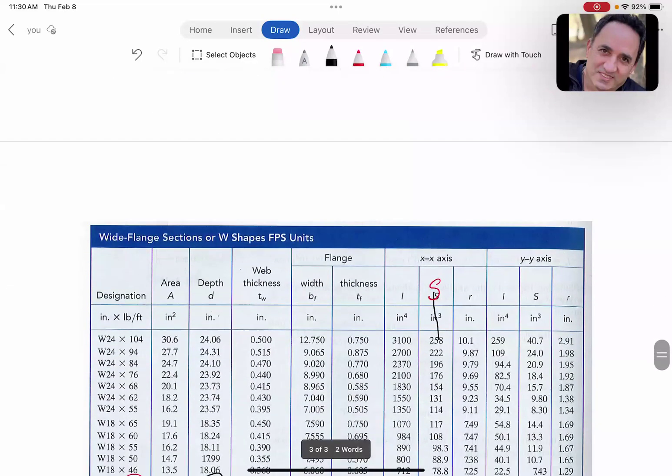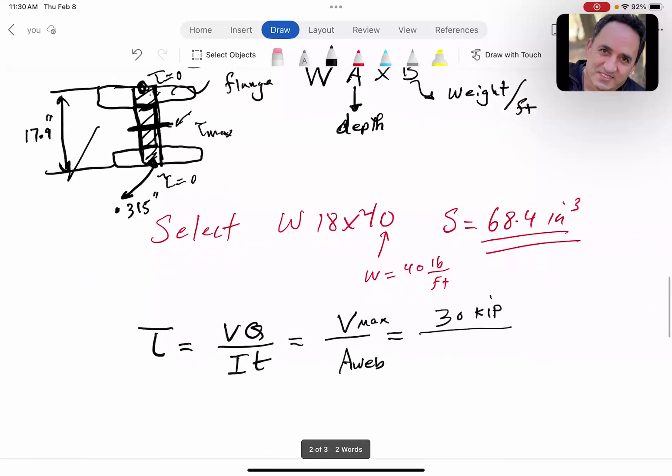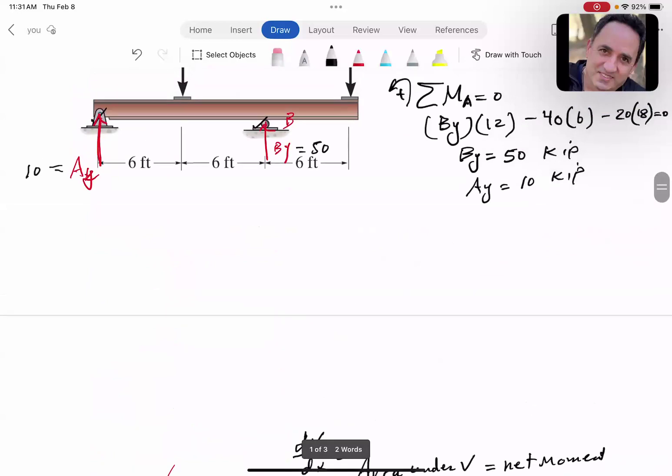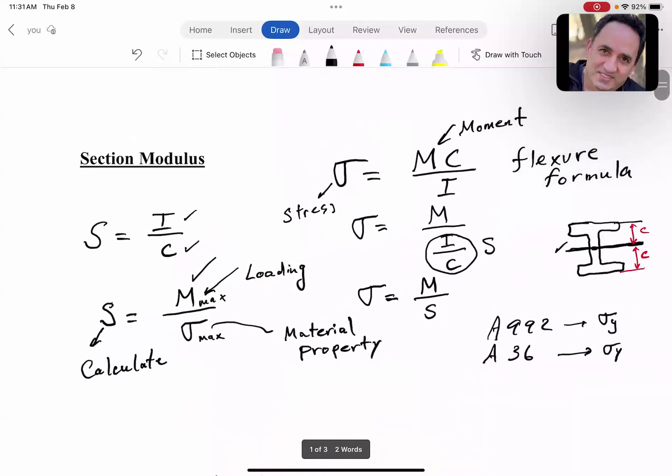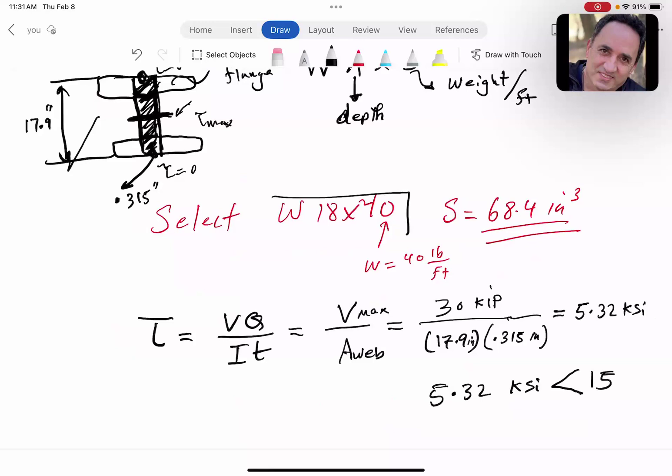The area becomes 17.9 inches times 0.315 inches. If you calculate this, τ = 30 kip / (17.9 × 0.315) = 5.32 ksi, which is much smaller than what's given. So we are safe by selecting this beam. That's less than the 15 ksi allowable given in the problem. We're all good. This W18×40 is a good selection. It can handle both bending stress and shear stress.